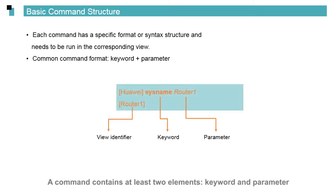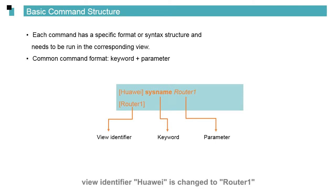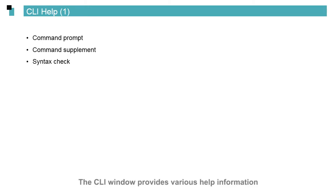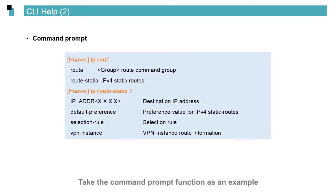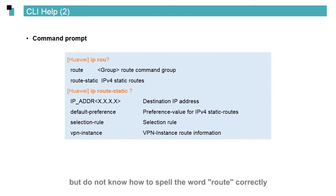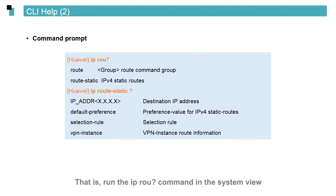A command contains at least two elements: keyword and parameter. In the example shown on the slide, the view identifier Huawei is changed to router1 — the keyword is sysname and the parameter is router1. The CLI window provides various help information. For example, if you want to enter a command beginning with IP route in the system view but do not know how to spell the word correctly, enter a question mark after ROU — that is, run the IP ROU? command in the system view.